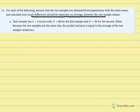Number 11: for each of the following, assume the two samples are obtained from populations with the same mean — indicating the null, mu1 minus mu2 equals zero, or mu1 equals mu2 — and calculate how much difference should be expected on average between two sample means. This is essentially asking us to calculate the estimated standard error of the mean difference. You need to recognize when they're giving you the definition rather than explicitly asking for the statistic.